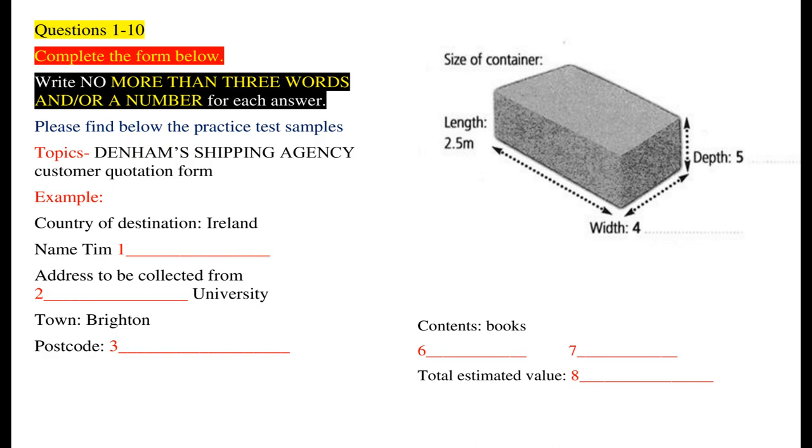Right. And what will actually be in the box, Tim? Oh, mostly old uni books. OK. And some music albums. Anything else? Yes. A little bit of stationery. I see. And could you put an estimate on the value of the items? The books are quite valuable. They're worth around £1,800. The music albums may be half that, say £900. And you can put the stationery down as £300.